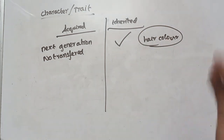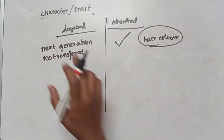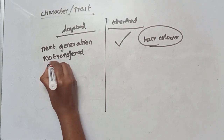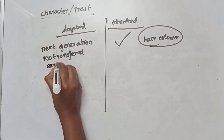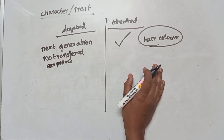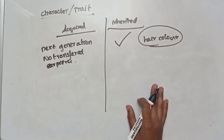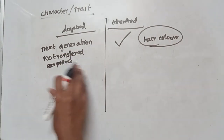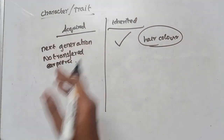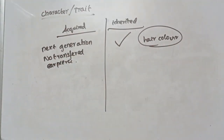The acquired character is not transferred to the next generation. But the inherited character is transferred from generation to generation. For example, if a parent has black hair, they will transfer black hair to the child. But dancing cannot be passed on — that is why acquired characters do not go to the next generations, but inherited characters do.